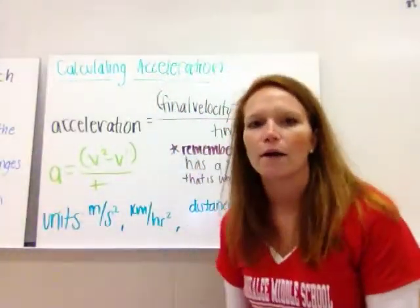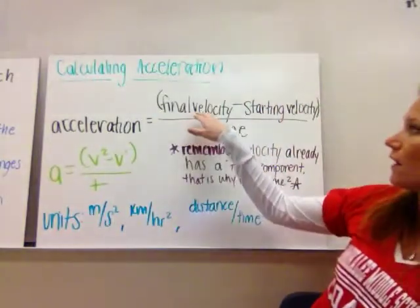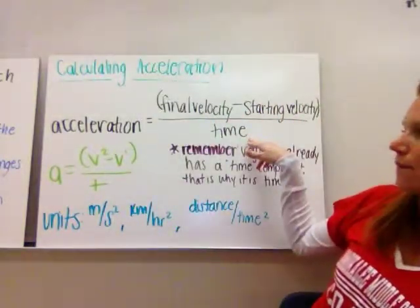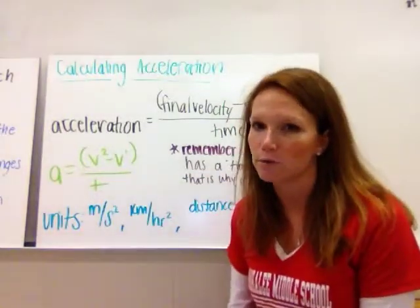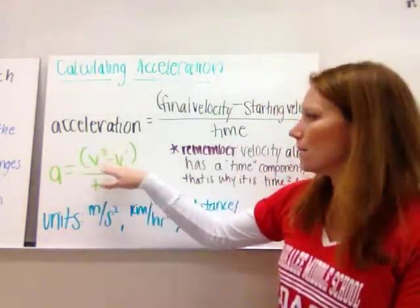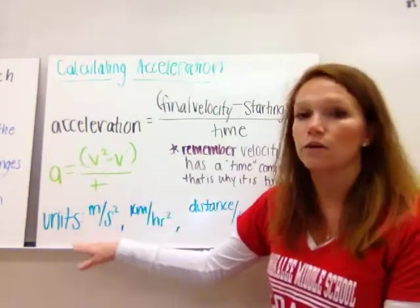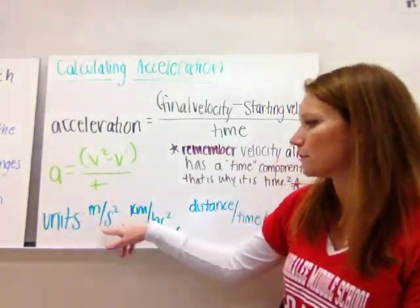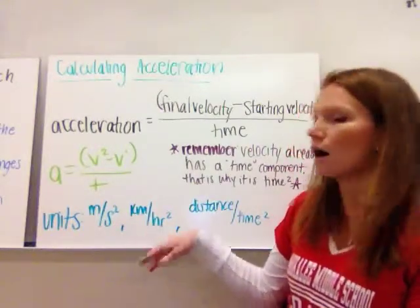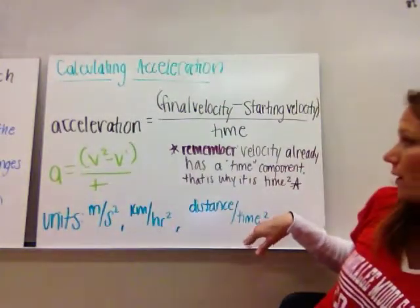How to calculate acceleration? The acceleration formula is final velocity minus starting velocity divided by time. This is sometimes written with just letters as A equals V2 minus V1 over time. The units for this are going to be meters per second squared, kilometers per hour squared, or miles per hour squared — it's distance over time squared.